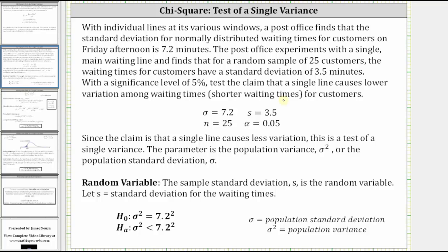Now let's work on stating the null and alternative hypotheses. Since the claim is that a single line causes less variation, this is a test of a single variance. And we will use the population variance for the null and alternative hypothesis.